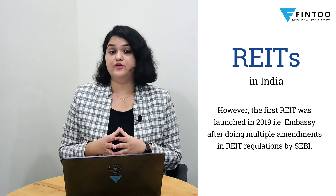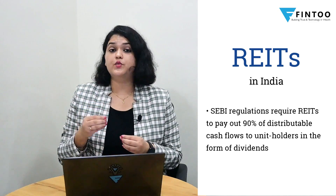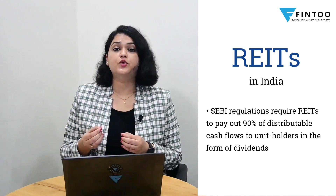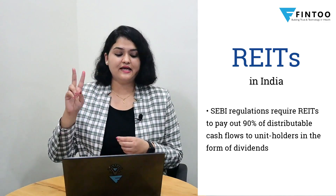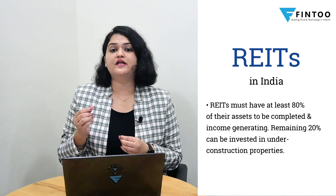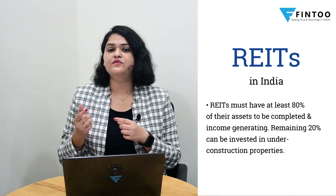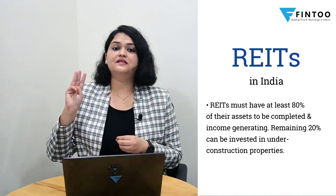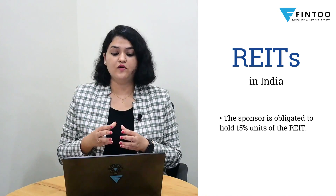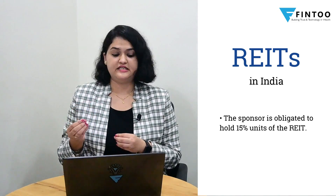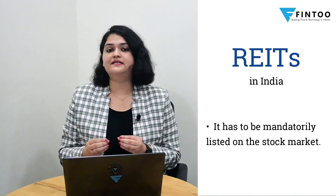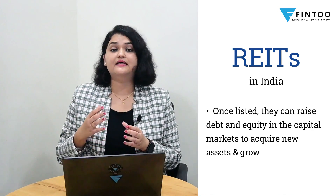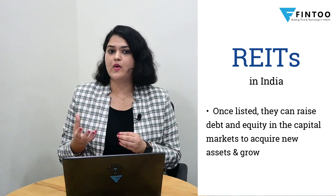Let's look at the current regulations. First, SEBI regulations require REITs to pay out 90% of the distributable cash flows to unit holders in the form of dividends. Second, REITs must have at least 80% of their assets as completed and income-generating properties; the remaining 20% can be invested in under-construction properties. Third, the sponsor is obligated to hold 15% of the REIT's units. Fourth, it must be mandatorily listed on the stock exchange, and once listed, they can raise debt and equity in the capital market to acquire new assets and grow.